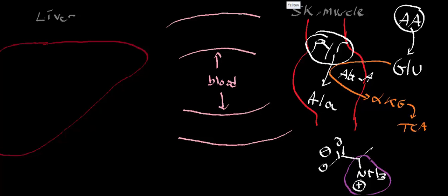One way we transport amines in the blood is via alanine. A second transporter of ammonia in the blood is glutamine. There's a key difference: in alanine, the amine is transported on the alpha position, whereas in glutamine, the amine is transported in the amide linkage on the R group of glutamine — not the alpha amine of glutamine itself.